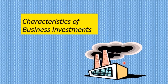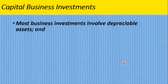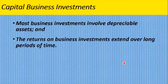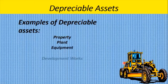We want to look at some characteristics of business investments. Most business investments involve depreciable assets — that is, non-current assets — and they must have a return on the investment that extends over long periods of time, long period again being defined as more than one year. Some examples of depreciable assets are property, plant, equipment, and developmental works. Notice it does not go into current assets, because current assets are of short life, usually less than one year.